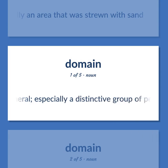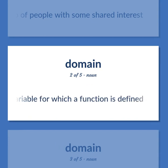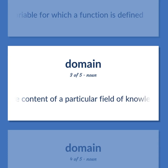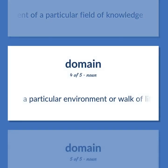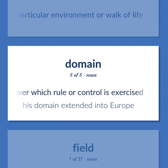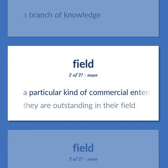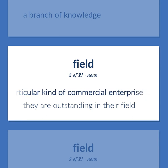Domain and Field: People in general, especially a distinctive group of people with some shared interest. Mathematics: the set of values of the independent variable for which a function is defined. The content of a particular field of knowledge. A particular environment or walk of life. Territory over which rule or control is exercised — his domain extended into Europe. A branch of knowledge. A particular kind of commercial enterprise — they are outstanding in their field.